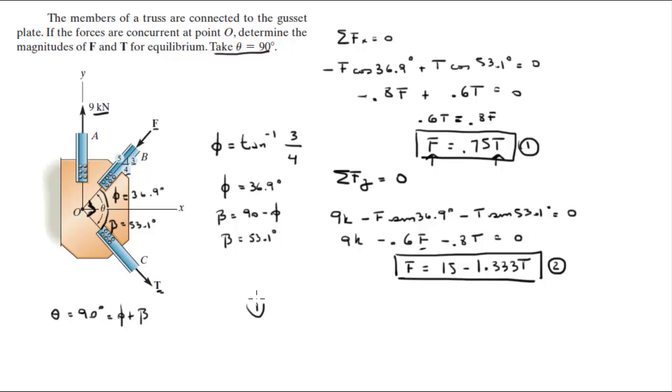So I set them equal to each other. 1 is equal to 2, which means that 0.75 T is equal to 15 minus 1.333 T. So when you solve for T, you're going to get that T is equal to 7.2 kN.